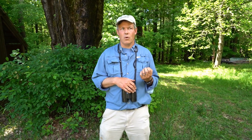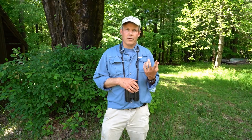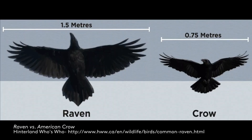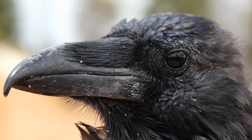Second is the size of the two species. The American crow is about a third smaller than the common raven. The common raven is much larger and has a much thicker bill than the American crow.